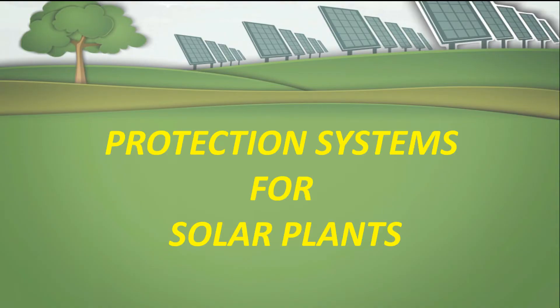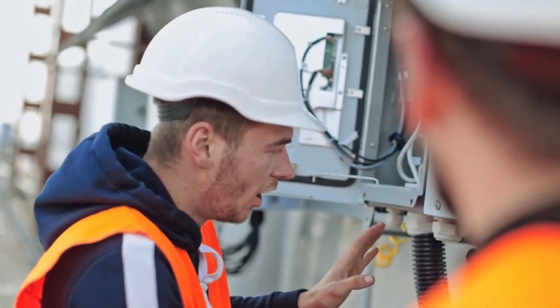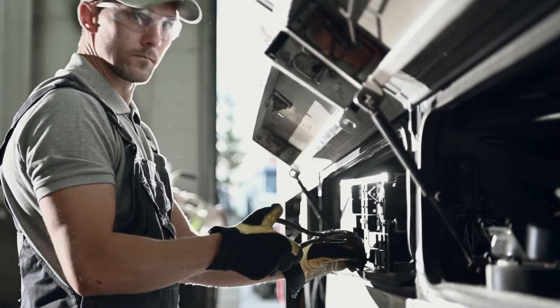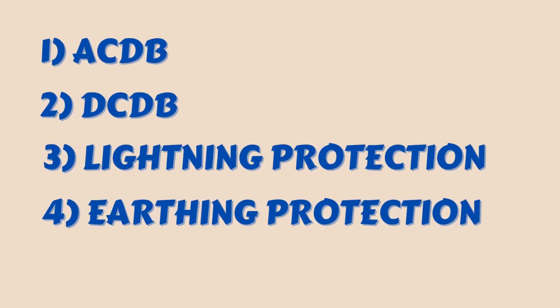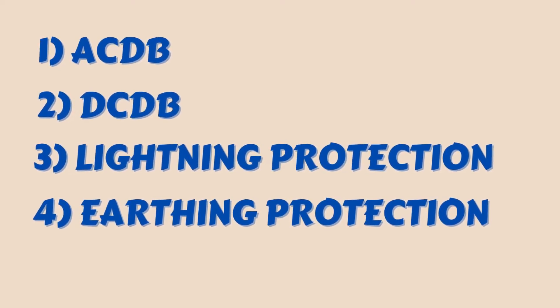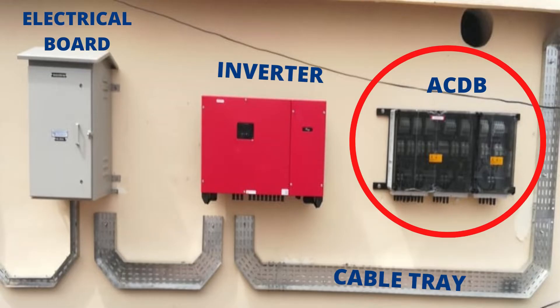Welcome back. After seeing the main and critical components like panels and inverters, in this particular segment we will see the protection systems for a solar plant. The protection system in a solar plant consists of four components: the first component is ACDB (AC Distribution Box), the second component is DCDB (DC Distribution Box), the third component is lightning protection system, and the fourth component is earthing protection system. Let us see them one by one, beginning with ACDB.